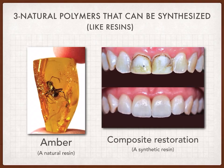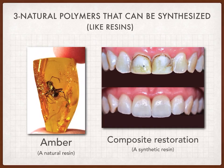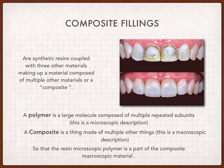Resins are polymers that are natural and come in many forms — for example, amber shown in the left picture is a natural resin, or a resin that can be synthesized, like the composite restorations we use in our field. So composite fillings are synthetic resin polymers that are coupled with three other materials, making up a material composed of multiple other subunits — simply, a composite.